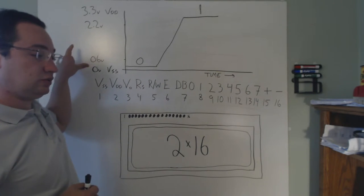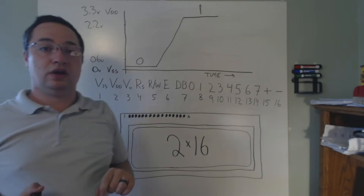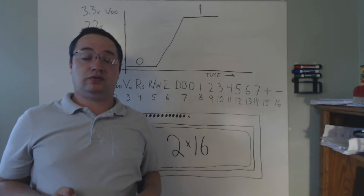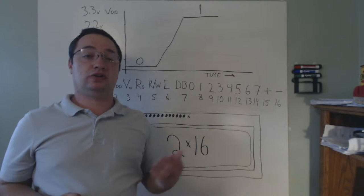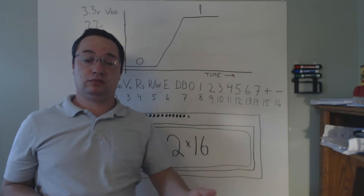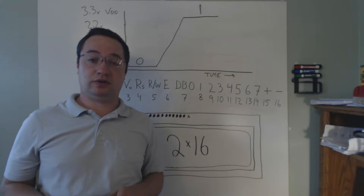If your screen happens to be a 5 volt screen, the only real difference is that the upper voltage limits will be higher and the general limits spread out a bit more. To be sure, consult the datasheet for your particular screen.